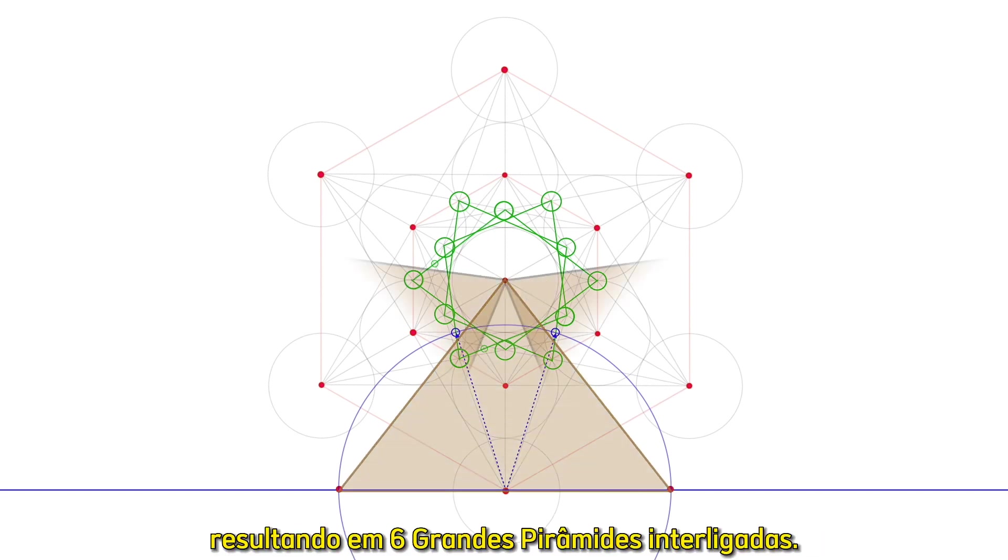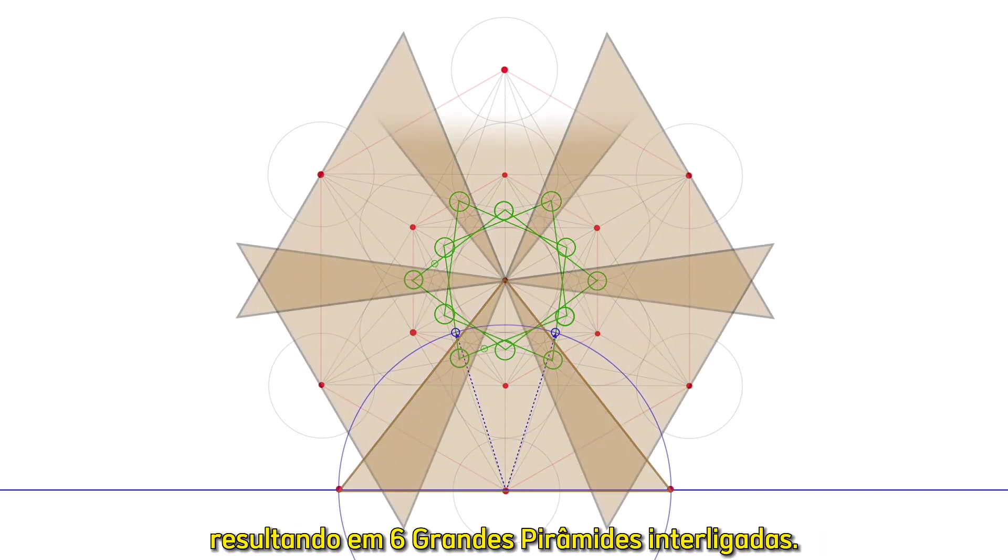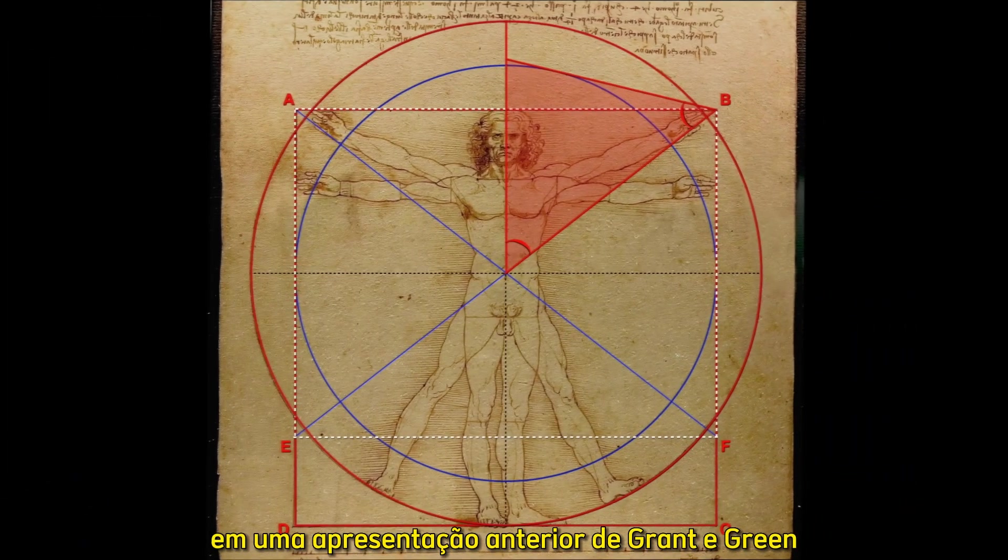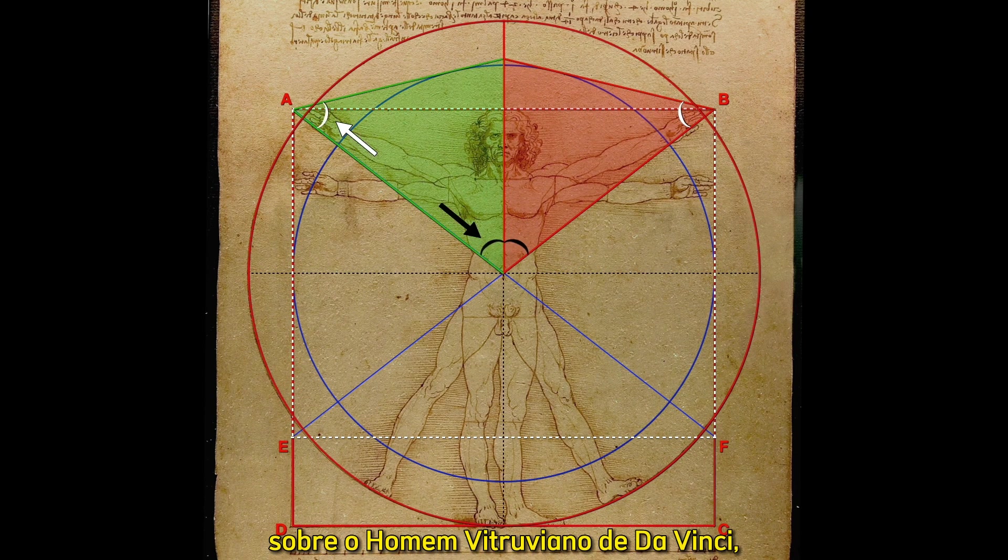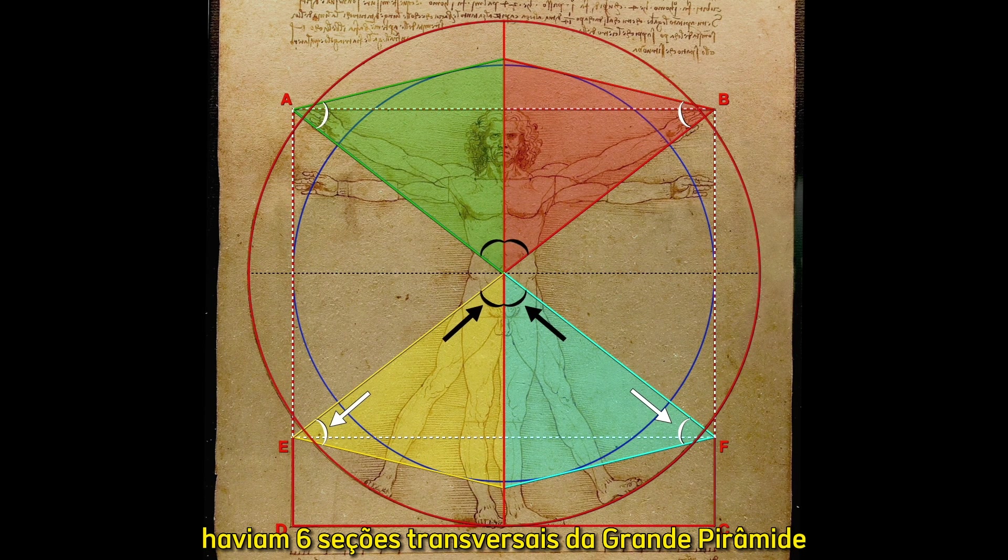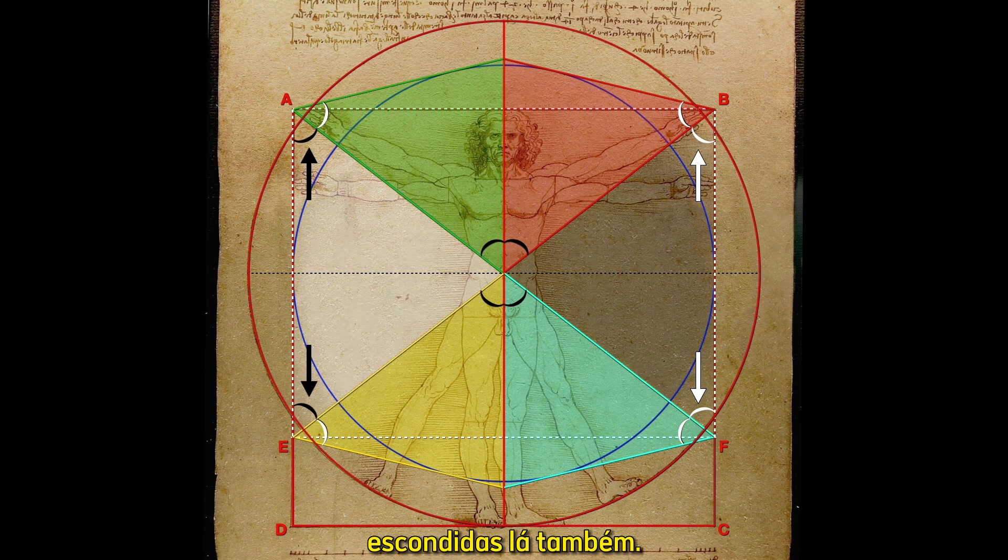Resulting in six interlocked Great Pyramids. You may remember in a previous presentation by Grant and Green on Da Vinci's Vitruvian Man, there were six Great Pyramid cross sections hidden there also.